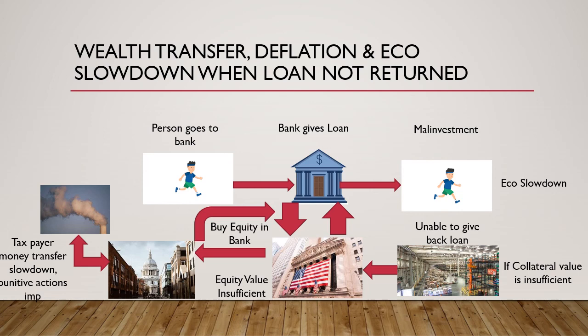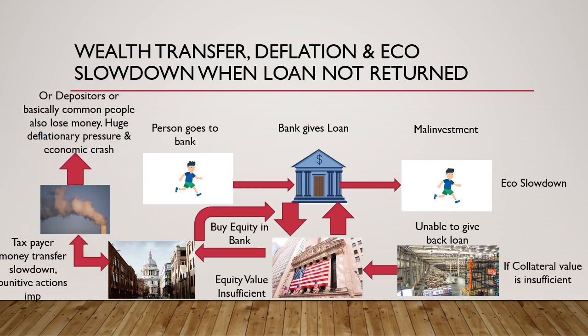The intervention of the federal government is required because otherwise we are in for a fourth scenario, which is a bigger mess. In this case, the depositors — in other words, the common people — would lose money. This would mean banks have to write off large amounts of loans from their balance sheets, causing enormous deflationary pressures on the economy and an eventual economic crash.